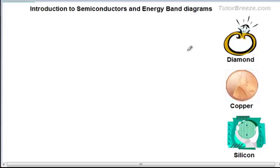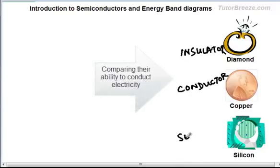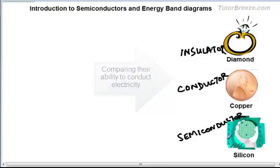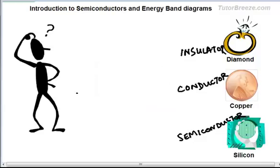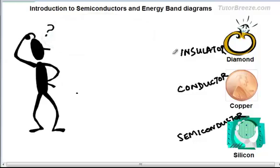Diamond is an insulator, copper is a conductor, and silicon is a semiconductor — as far as their ability to conduct electricity is concerned. Now your question is going to be: how do you know that? Are there any measured values on the basis of which you can justify the claim that copper will conduct electricity and diamond will not? And the answer to that would be yes.